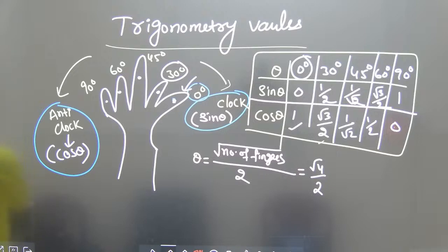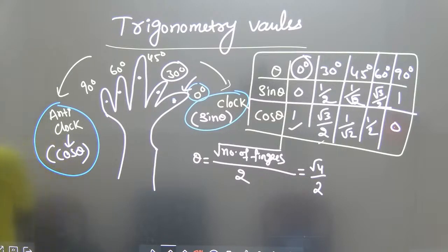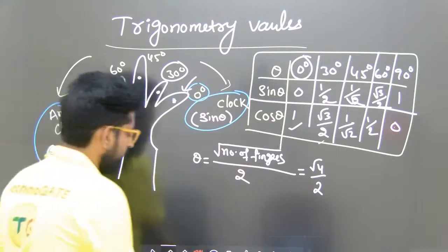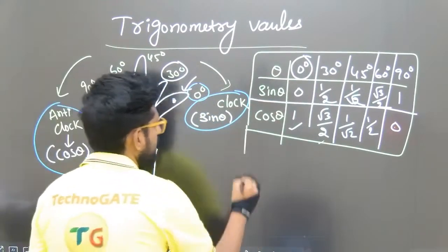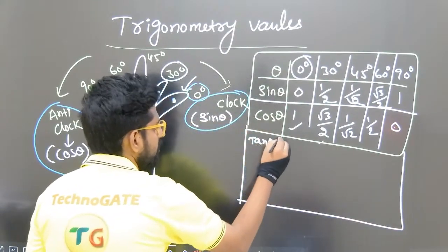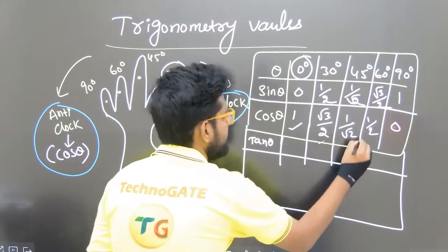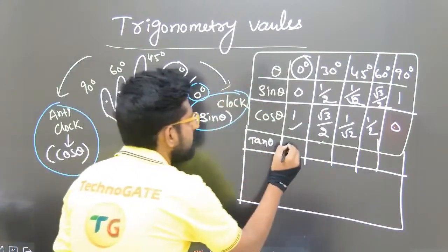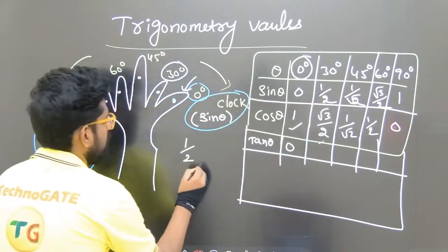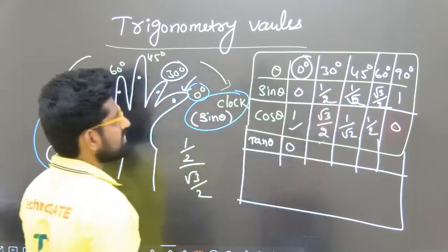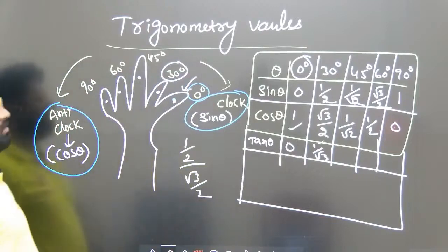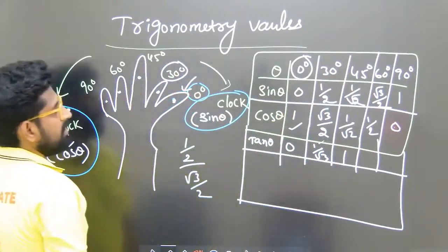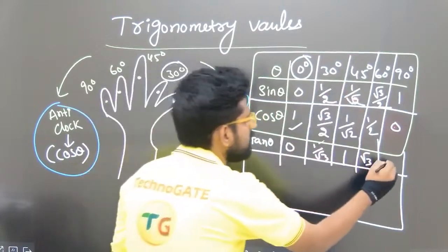We got the trigonometry values. Now if you want tan theta, you know tan theta = sin theta by cos theta. So: 0 by 1 = 0; then 1/2 divided by √3/2 — the 2s cancel — giving 1/√3; at 45°, (1/√2)/(1/√2) = 1; at 60°, the value is √3; and at 90°, 1 by 0 = infinity.